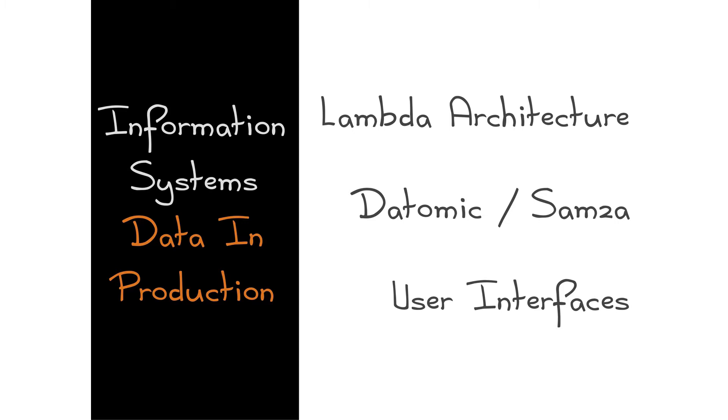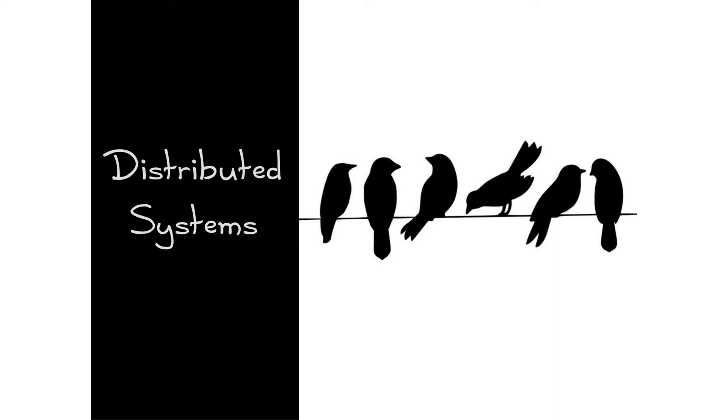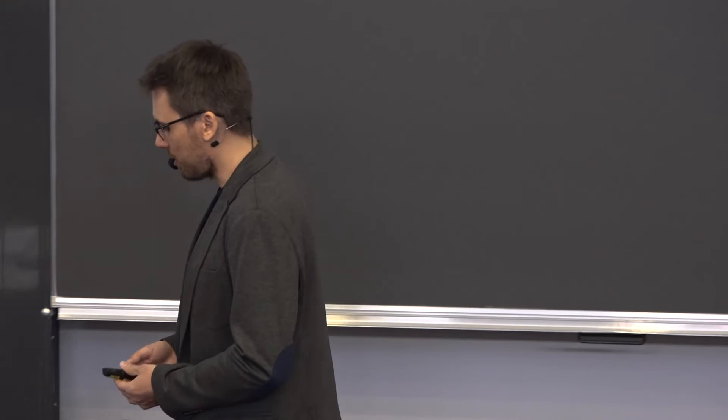There has been a lot of talk about distributed systems at this conference, and I want to throw in my two cents. Distributed systems need communication. There are things that work well over the wire — that's data — and things that work terribly over the wire — that's objects, because objects need to pack context and that doesn't transfer well over the wire. So let's talk about data.